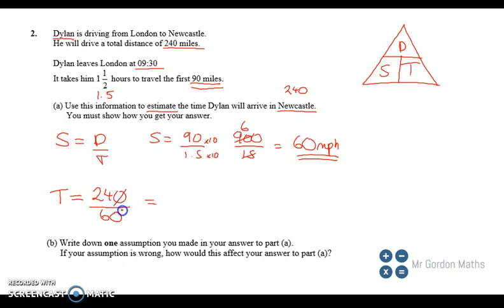Well, when we divide it, we can cancel off any zeros that match, and then 24 divided by 6 is going to give me 4. So the units, miles per hour, so that's 4 hours. It would take us if we were travelling at that speed the whole way.